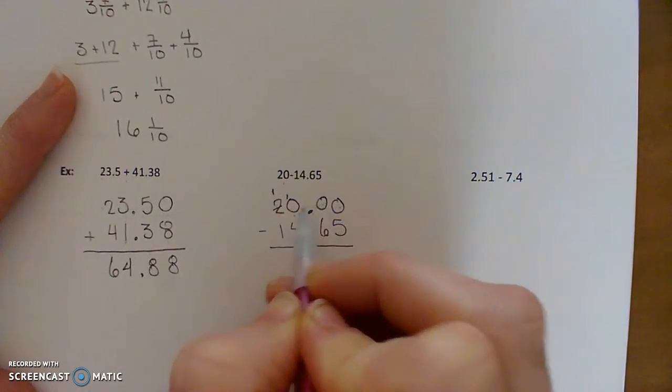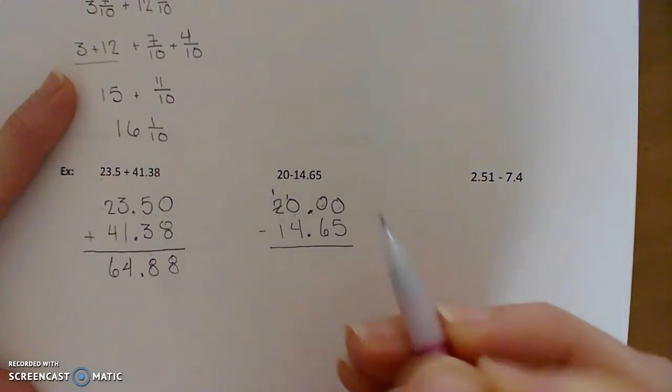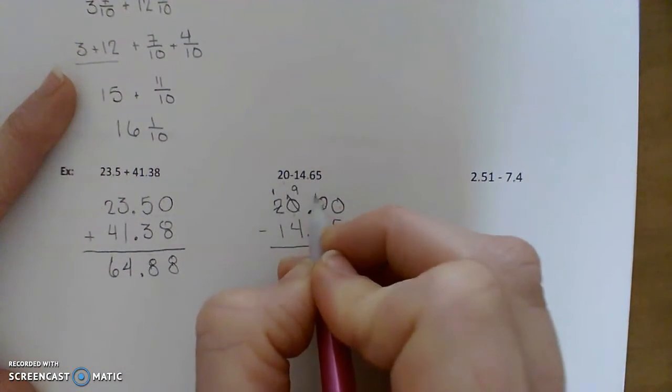And, of course, we need to regroup so that we have some values here in the tenths place. So knock that down to 9, make that a 10.